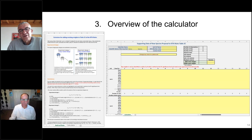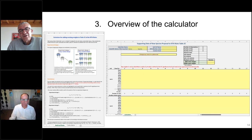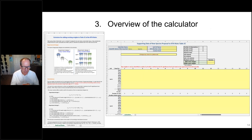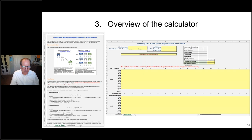Now I hand over to Kirk, who will give an overview and a demo of the calculator. The tool has a front page with details of what Jean-Louis went through, giving an idea of the two types of designs — the nested design on the left and the cross design on the right — along with the mathematical formulation, providing the theoretical basis for these calculations.